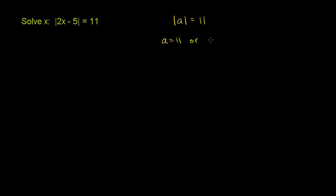Well, it could be negative 11. a could be equal to negative 11, because there are two possible a's that are exactly 11 away from 0. It could be positive 11, or it could be negative 11. That's the exact same logic you apply to an equation like this.